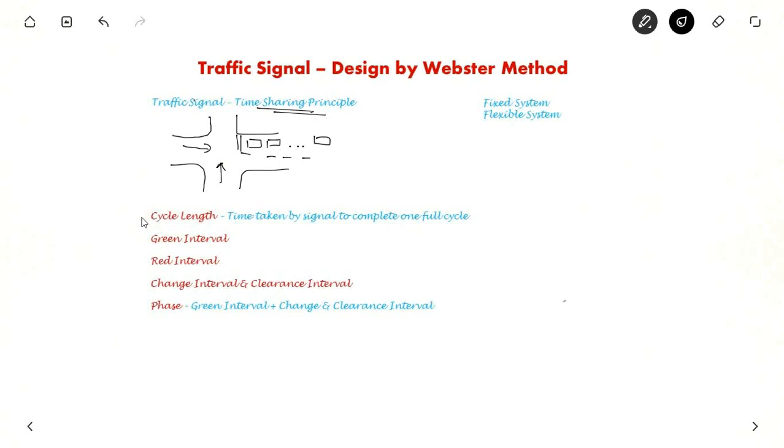Now let us see the important terms associated with traffic signal. First is cycle length. Cycle length is the time taken by the signal to complete one full cycle. Green interval and red interval are the amount of time for green and red time respectively.